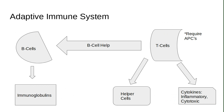Helper T cells increase antibody production by releasing cytokines, which provide activation signals for B cells that regulate their proliferation and differentiation. Helper T cells are critical to the T cell response as a whole — they have different functions based on the subset of cytokines they produce. A defect in helper T cells can significantly impact the adaptive immune system, causing a lower response overall.